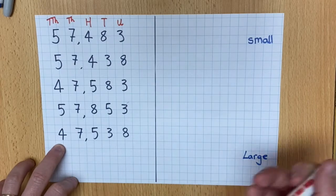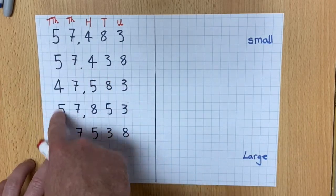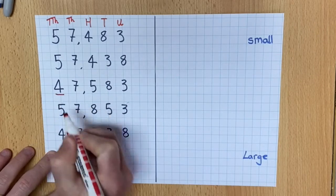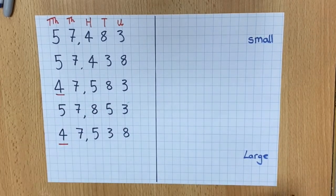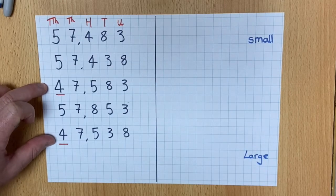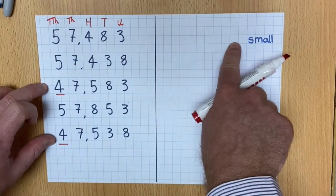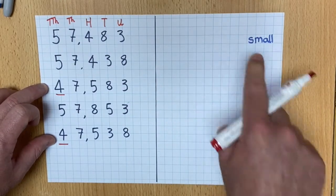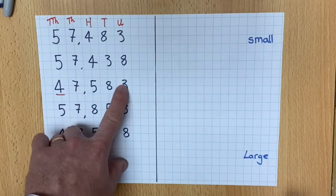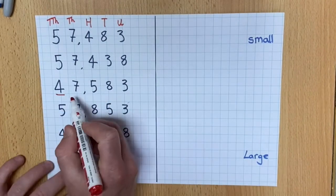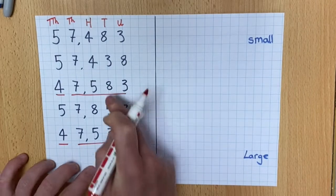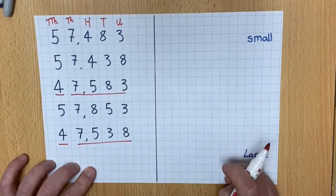So then I need to think, well, which of these numbers is the smallest? Well, I have a four and a four. So that must mean this number or this number will be the smallest. But I can't decide that until I've checked the rest of the numbers. So I need to check the rest of these numbers to find out which one of these two is the smallest.